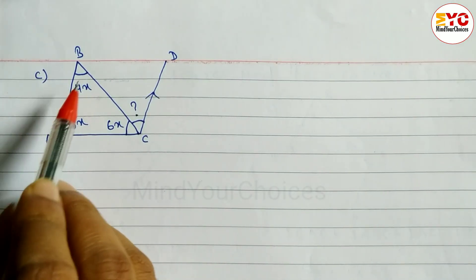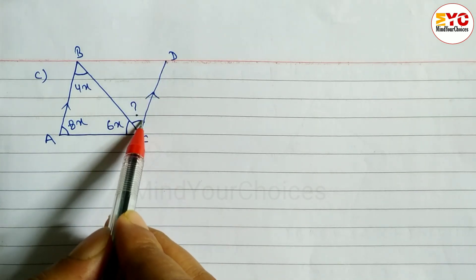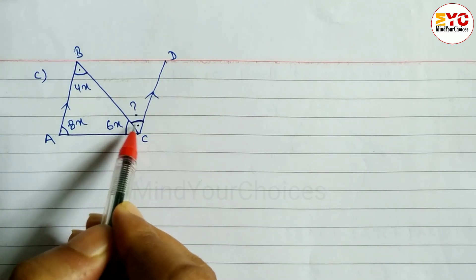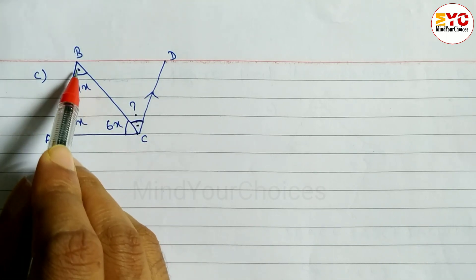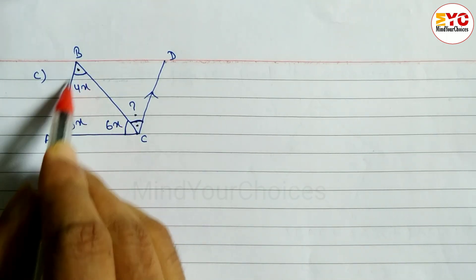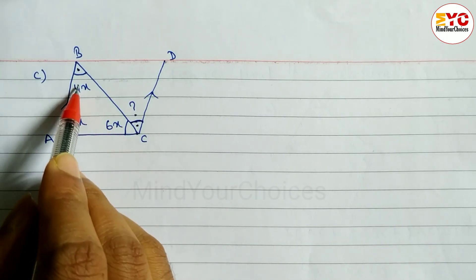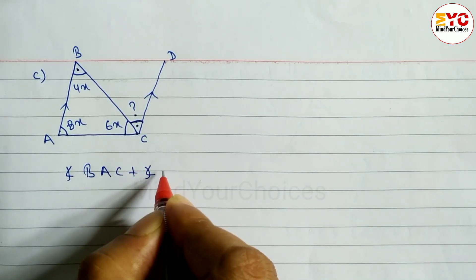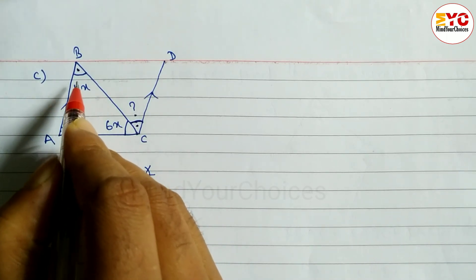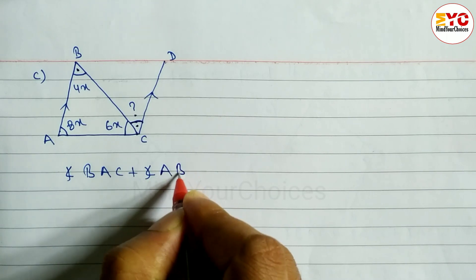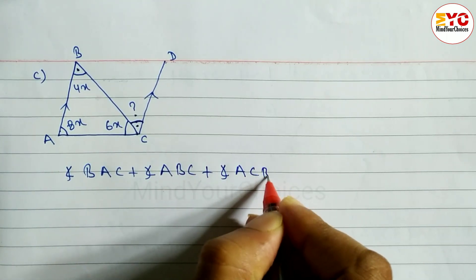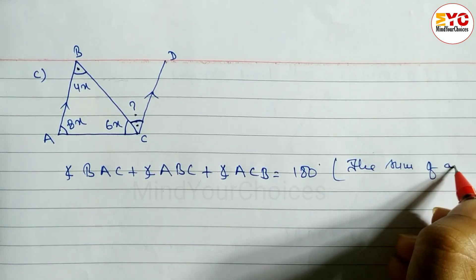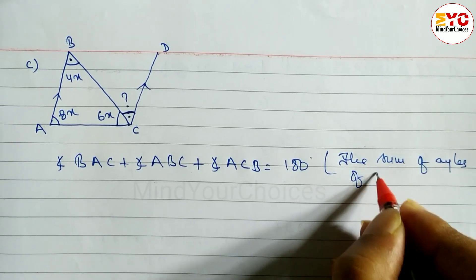Now look at question 7c. We have to find angle BCD. To find this angle, we find angle ABC, which has an alternate angle relationship with BCD. In triangle ABC: 8x + 6x + 4x = 180 degrees, from the sum of angles of a triangle. So we write: angle BAC + angle ABC + angle ACB = 180 degrees.